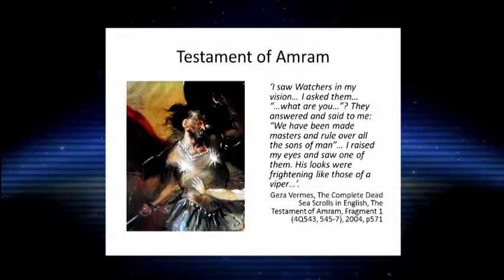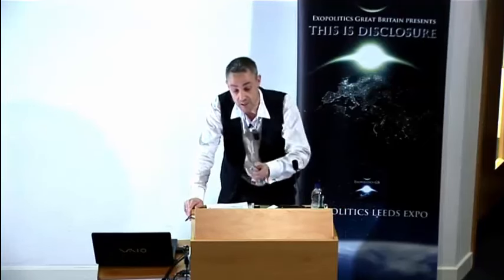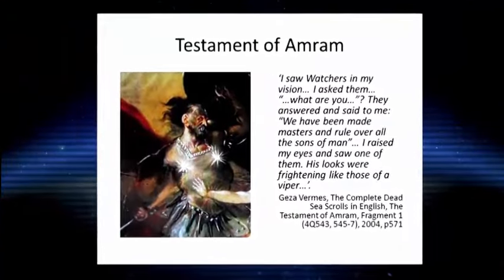In the Testament of Amron, Fragment 1, retrieved from the Dead Sea Scrolls, he said: 'I saw watchers in my vision and I asked them, what are you? And they answered and said unto me: we have been made masters and rule over all of them, all of the sons of man. I raised my eyes and saw one of them — his looks were frightening, like those of a viper.' So we are instantly told that the watchers themselves are identified with serpents, with the seraphim. The shield here — the Greek word opylon — is where we get the etymology for plea on a boat, because shields were put on the side of boats.